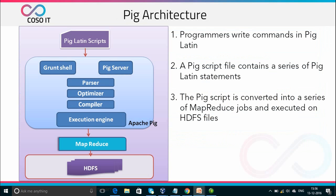Pig sits on top of Hadoop and is an abstraction over MapReduce — all Pig scripts internally are converted into Map and Reduce tasks. The programmer writes commands or scripts in Pig Latin, a scripting language, and a Pig script file contains a series of Pig Latin statements. A Pig script can be run either on a Grunt shell or a Pig server. The execution engine then parses, optimizes, and compiles a script, converts it into a MapReduce job, uses HDFS to store intermediate data between MapReduce jobs, and writes its output to HDFS.